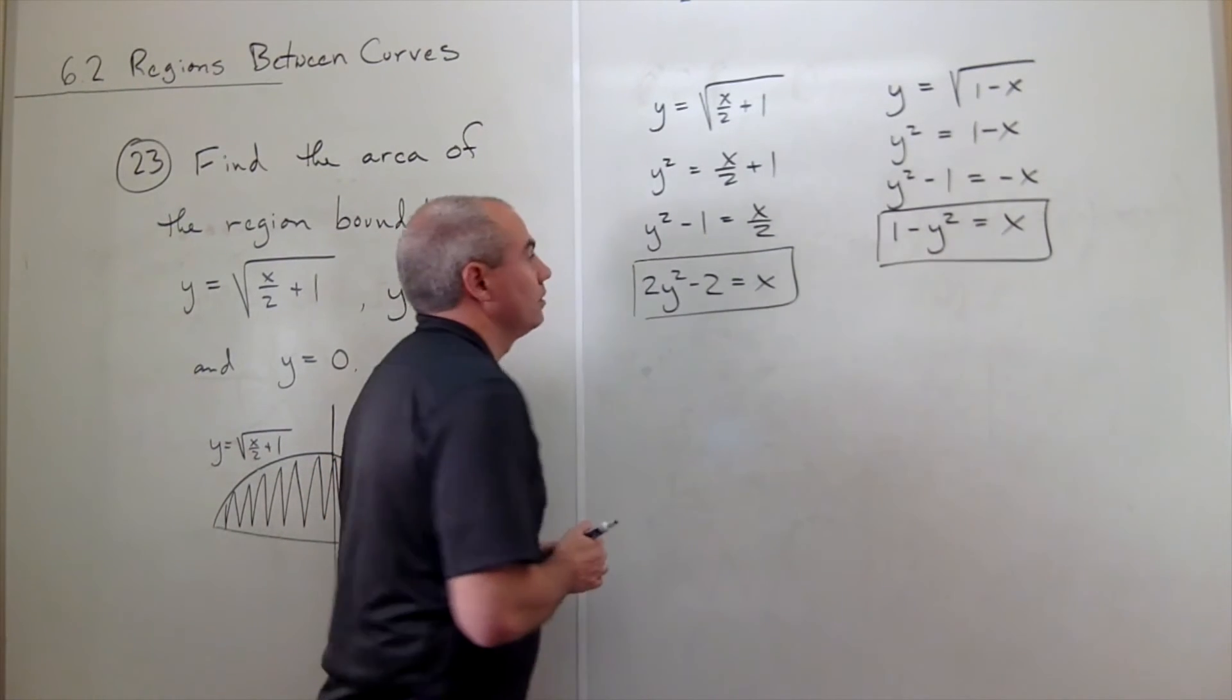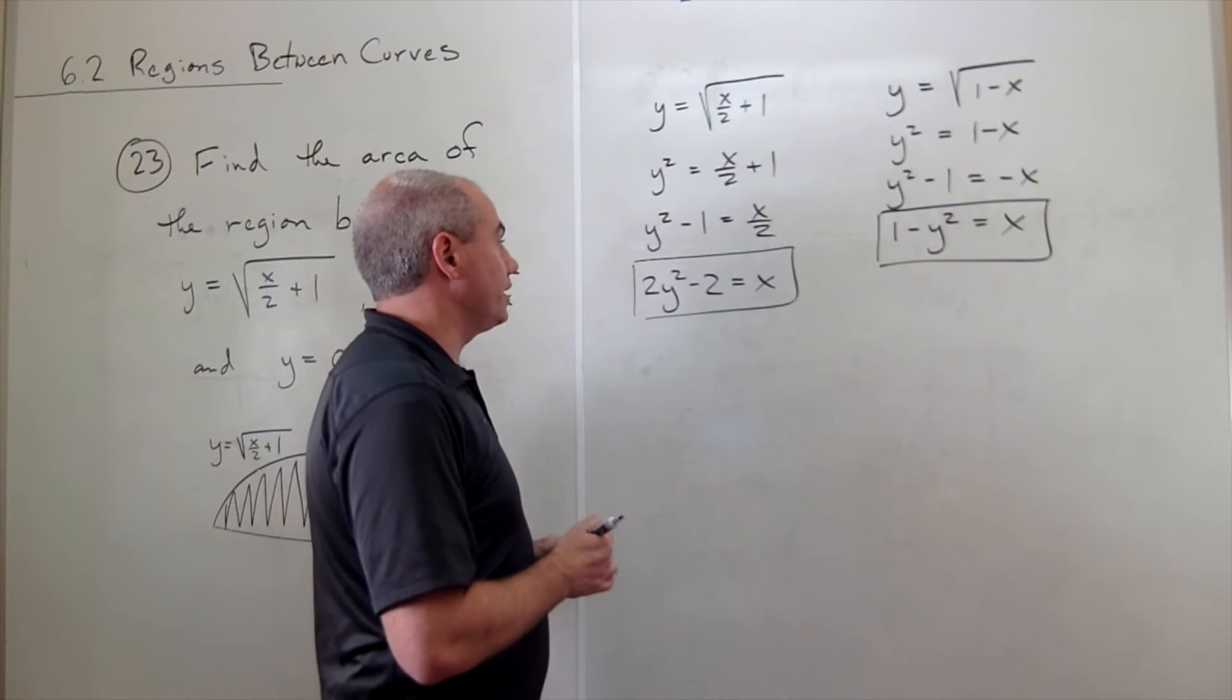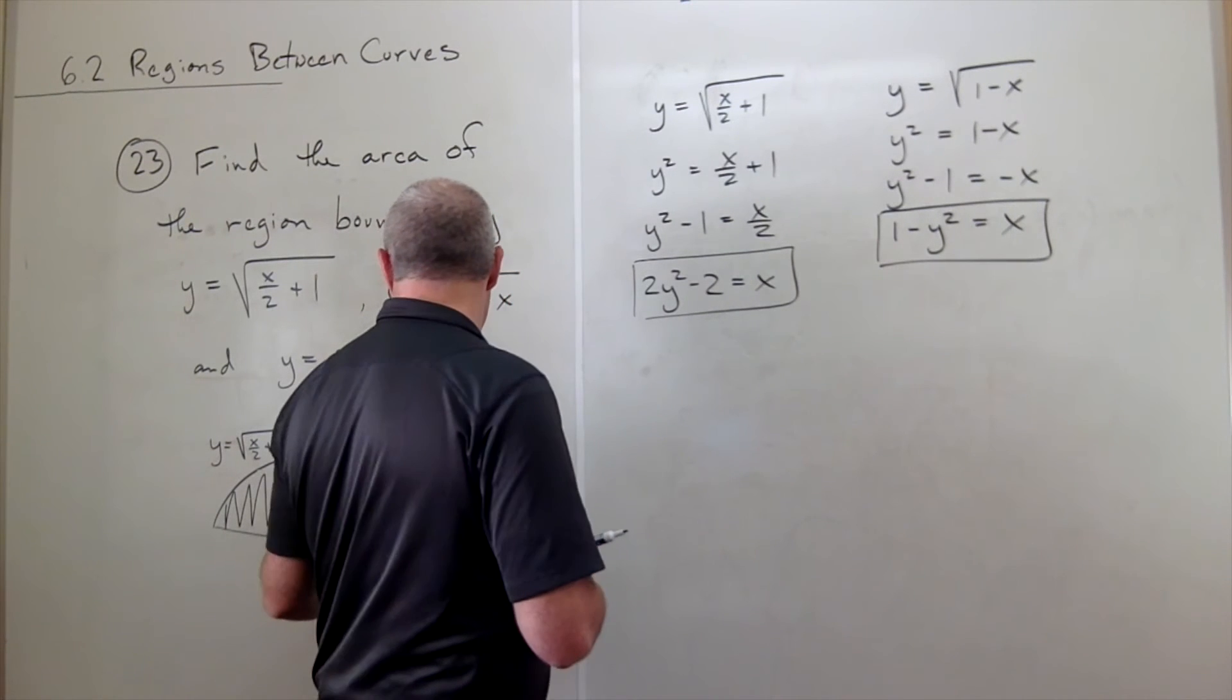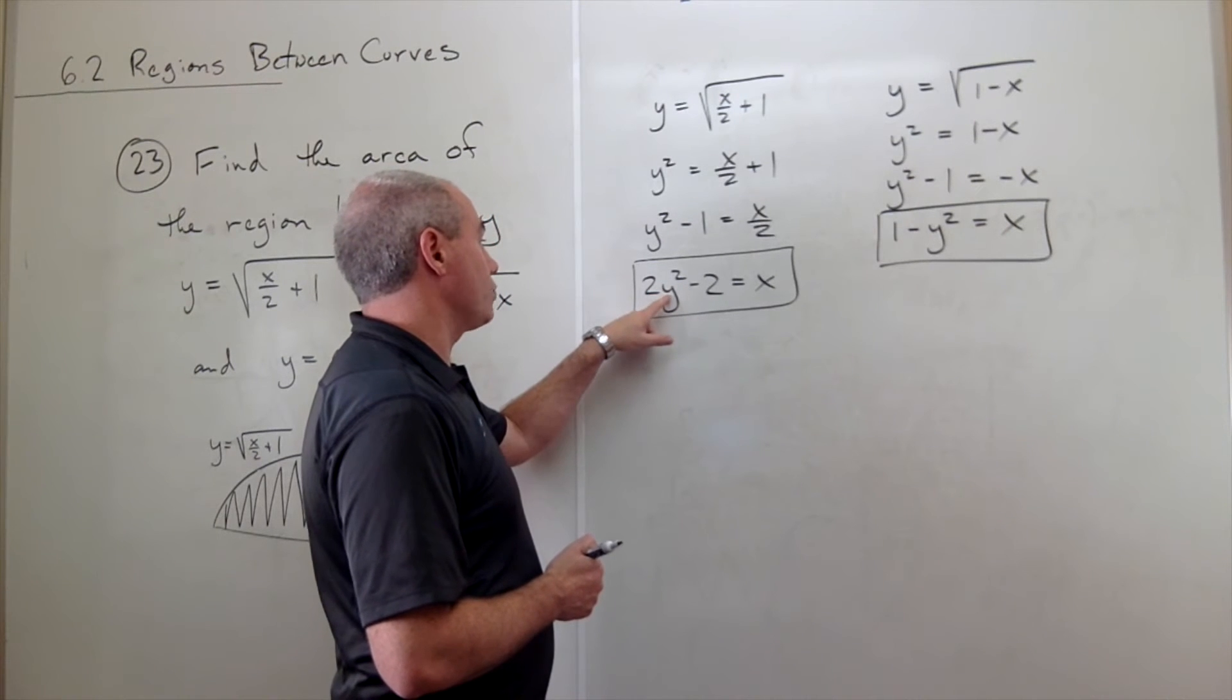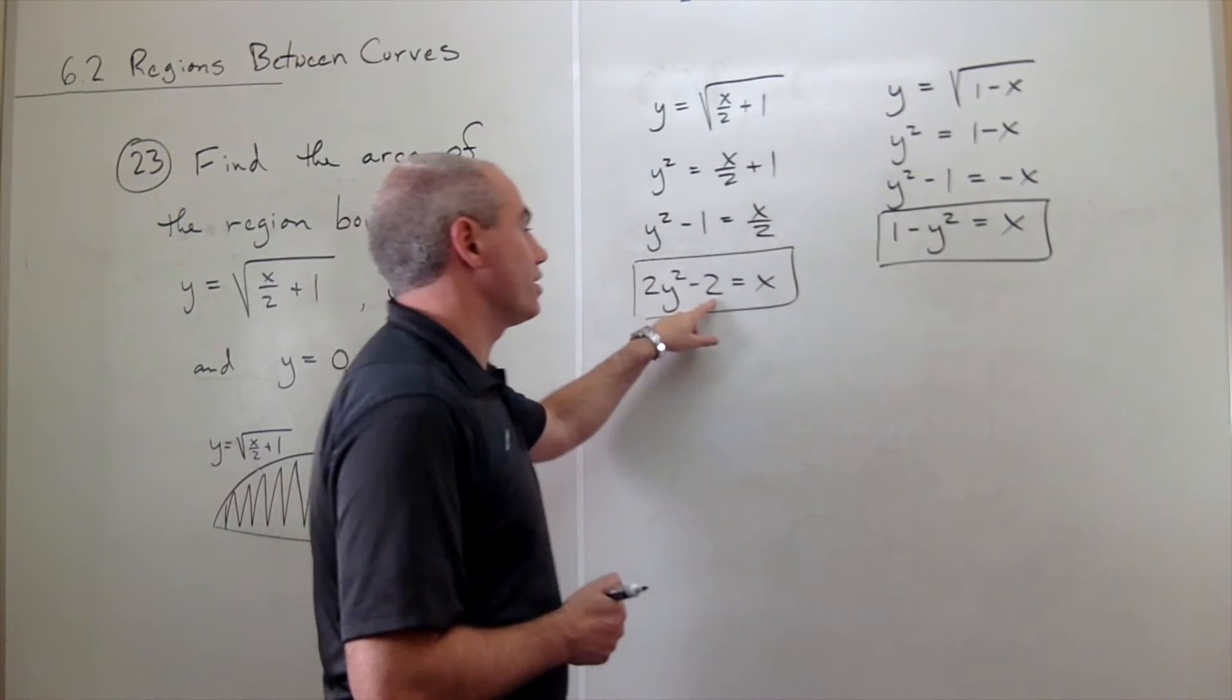What do we think that this y value might be? Well, we know that x is 0 right there, so y might be 1. So if y is 1, we get 2 minus 2 is 0,